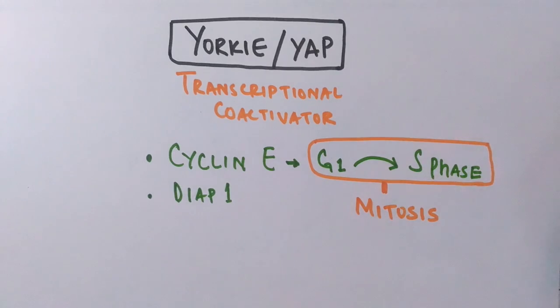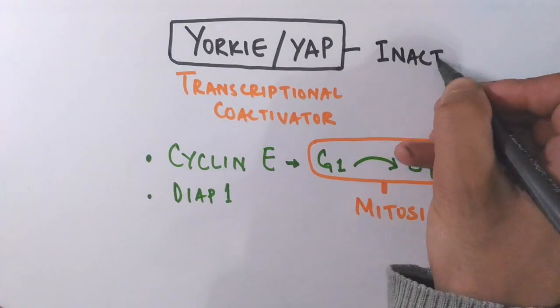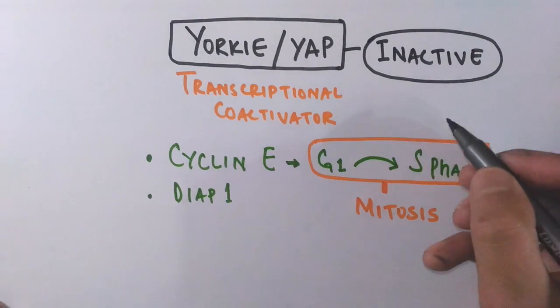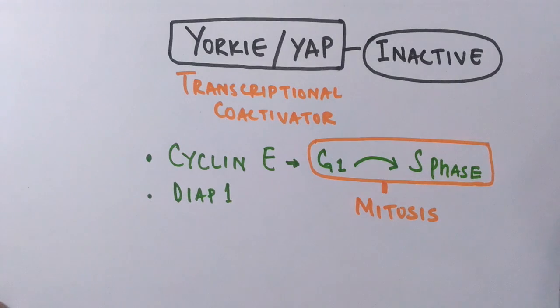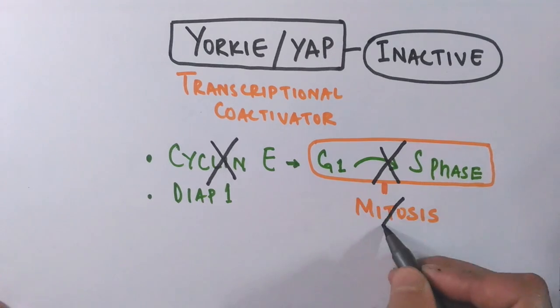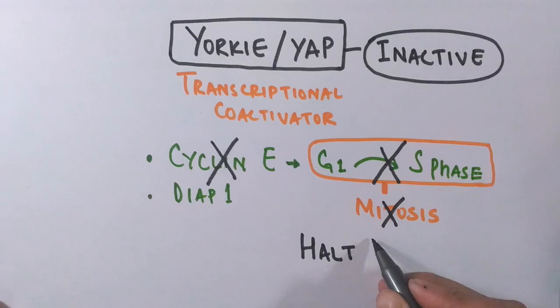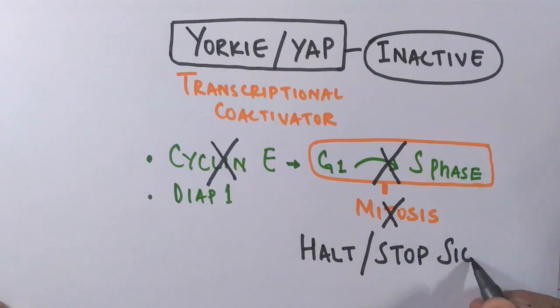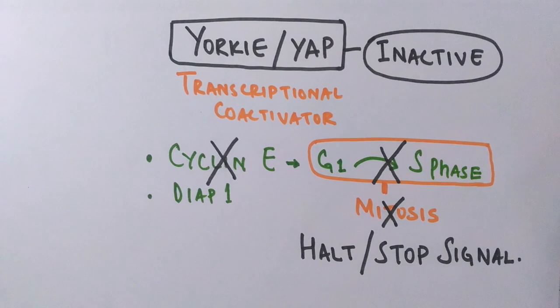When this Yorkie or YAP becomes inactive, that transcription coactivator becomes inactive, there is no transcription of cyclin E genes or DIAP genes. When there is no transcription of cyclin E genes, mitosis will be halted because the cell will not progress from G1 phase to S phase. This is how the organ size is controlled when it reaches maturity.